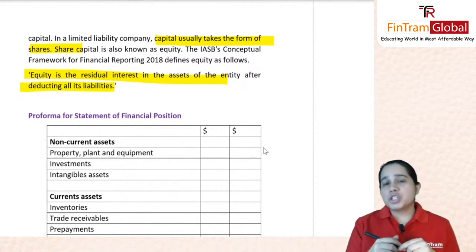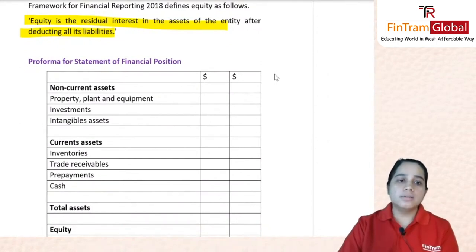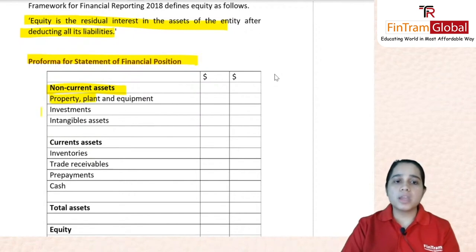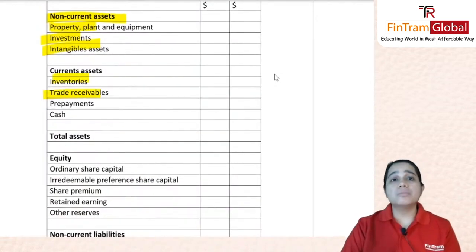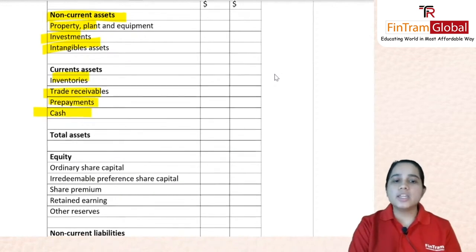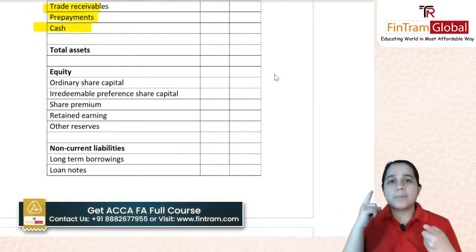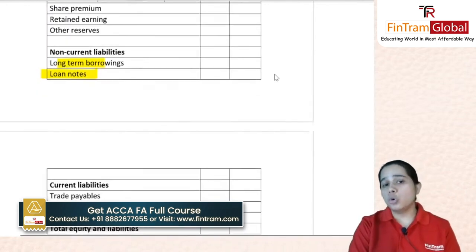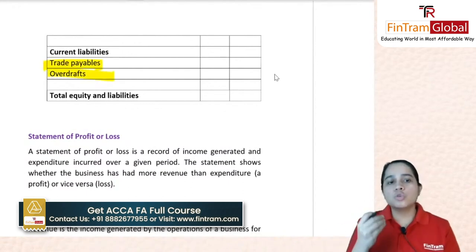For the statement of financial position — the balance sheet format — you have non-current assets: property, plant and equipment, investments, and intangibles. Then current assets: inventories, trade receivables (debtors), prepayments, and cash. You then get total assets. In the equity section: ordinary share capital, preference share capital, share premium, retained earnings, and other reserves. Non-current liabilities include long-term borrowings or loan notes. Current liabilities include creditors, trade payables, and overdrafts. The total of equity and liabilities should equal your total assets.